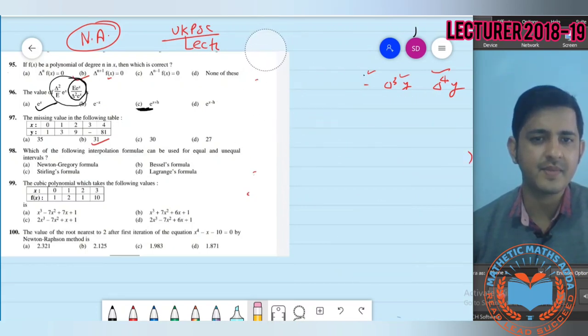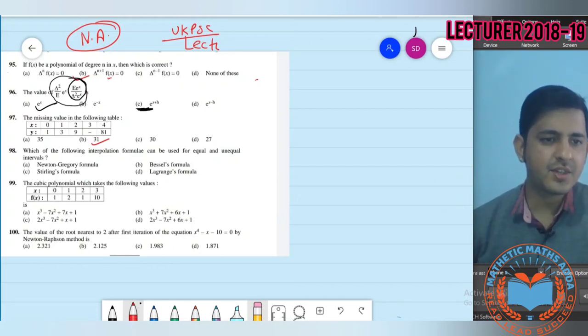Question 98: Which of the following interpolation formulas can be used for equal and unequal intervals? This is a very important question. Lagrange's formula is used for equal and unequal intervals, while Newton-Gregory formula is used only for equal intervals. So Lagrange formula is used for both equal and unequal intervals.